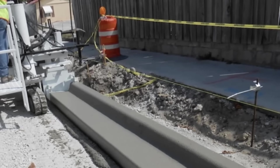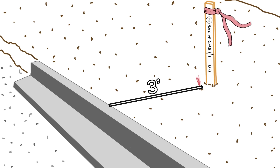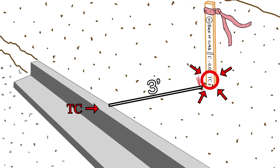For instance, if you are staking curb and providing a cut or fill, whether your grade was to the top of curb or to the pavement isn't something that is necessarily known by anyone but you. We must specify.